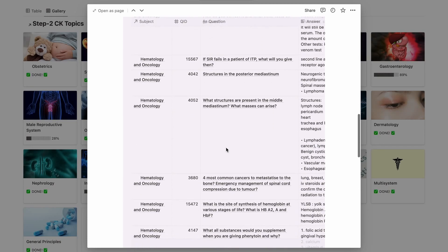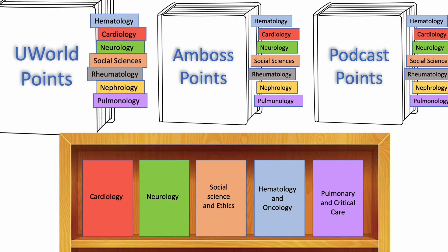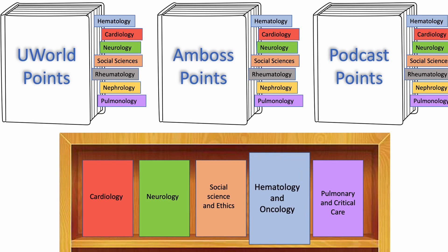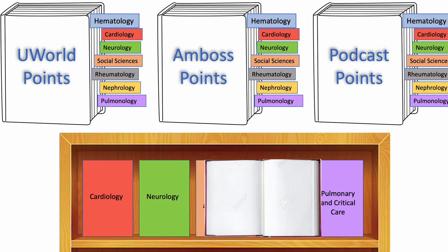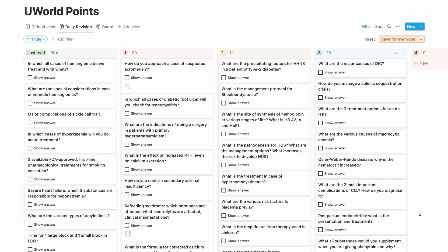This is what the database looks like in Notion. When I open any subject, all pages with questions from that particular subject automatically show up. All the different databases are segregated subject-wise in the background — every time you open a particular subject from your bookshelf, questions pertaining to that subject are extracted from the different databases and shown in one place, with the help of formulas and filter functions I've built in.